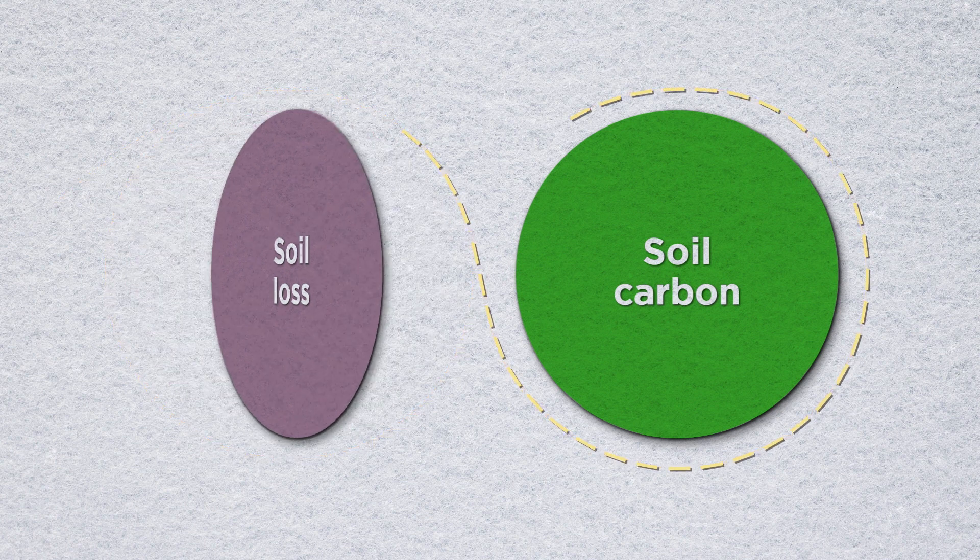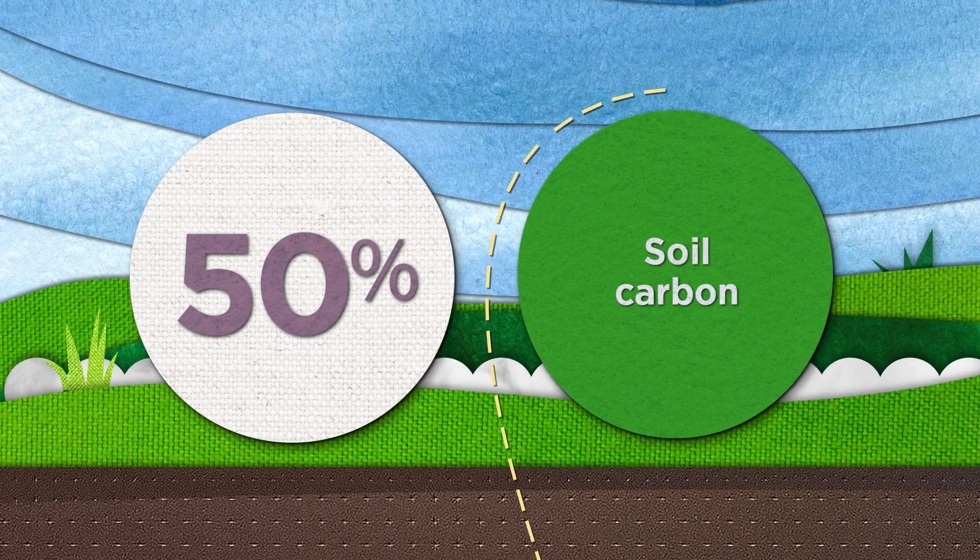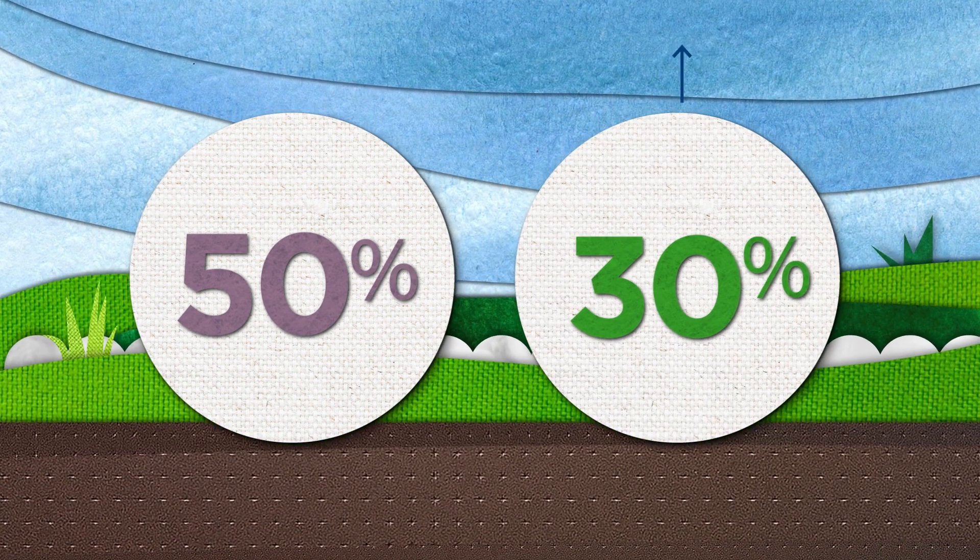Trust Protocol growers have committed to a 50% reduction in soil loss and a 30% increase in soil carbon.